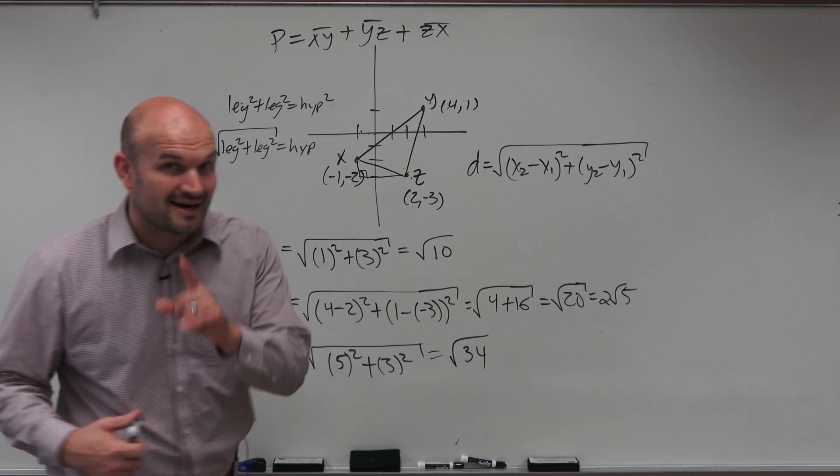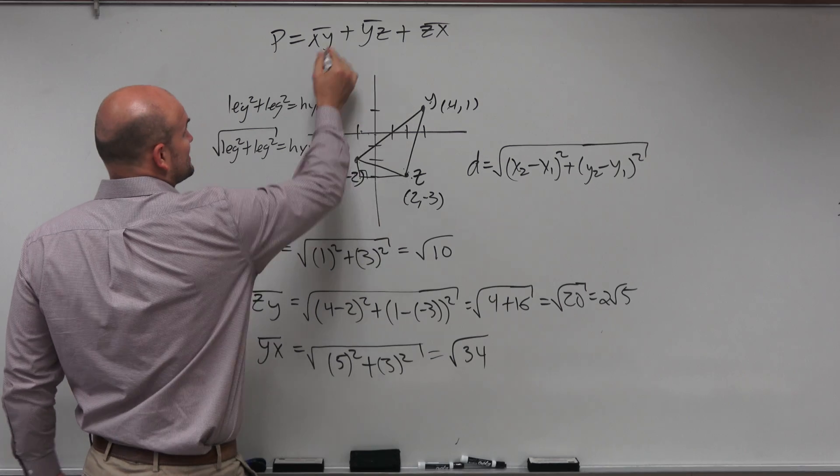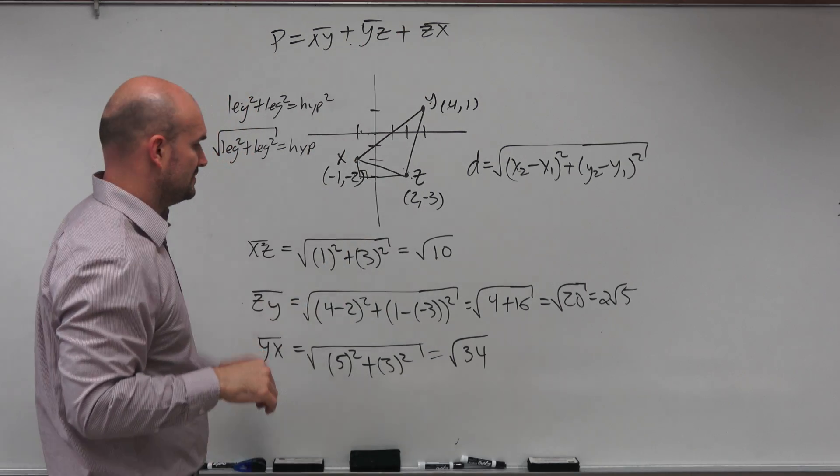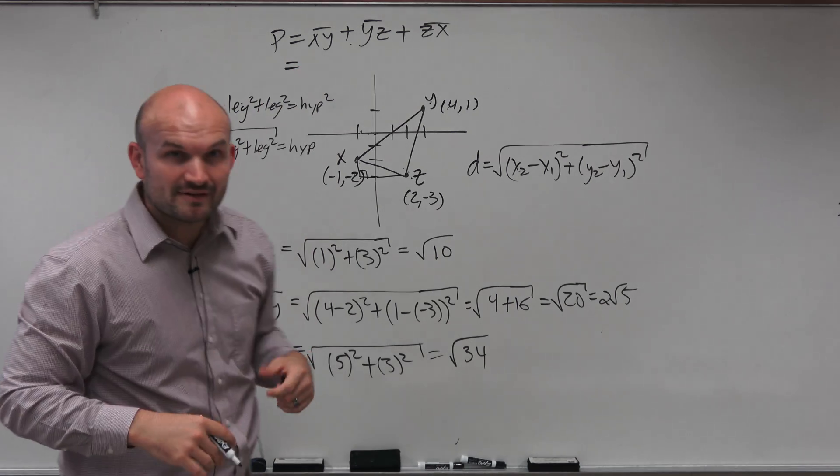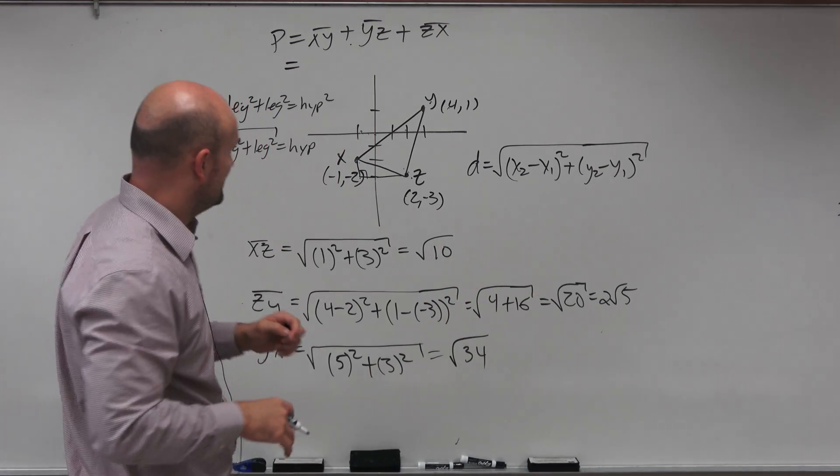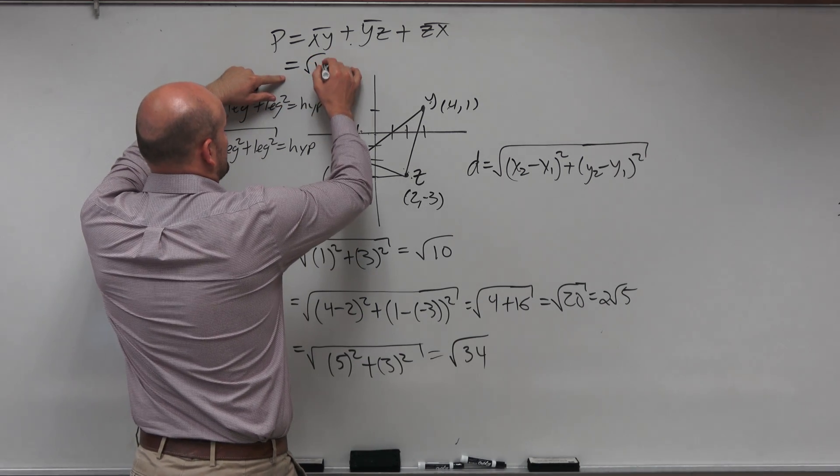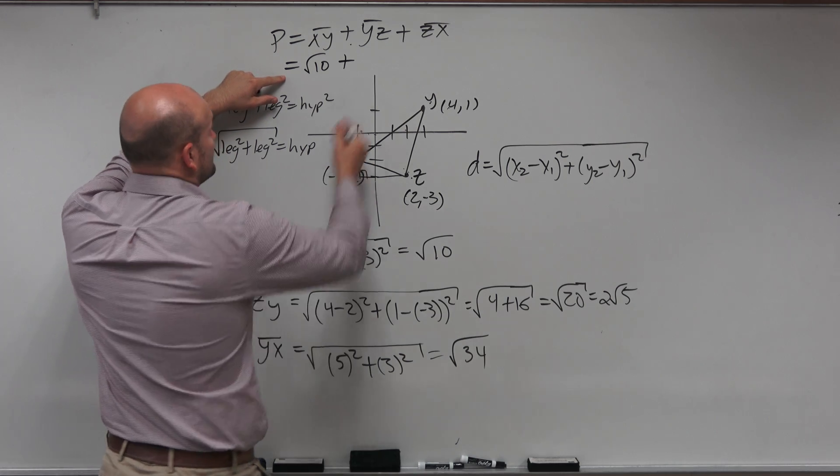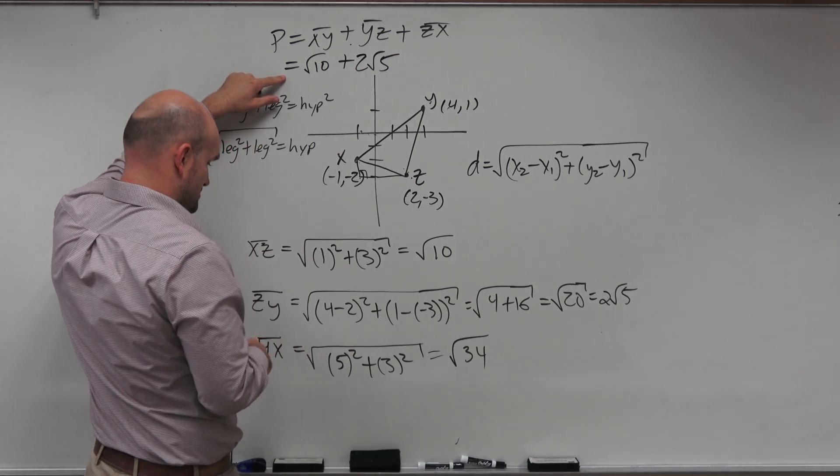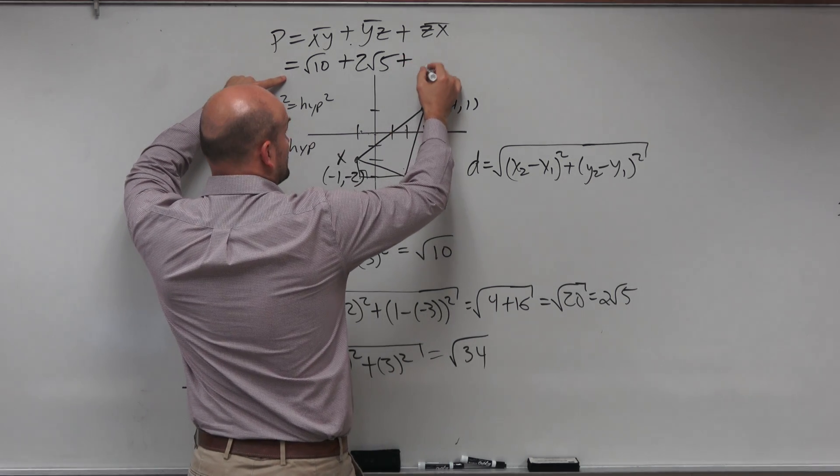And then we are not done, though. I almost got it. Remember, guys, we're finding the perimeter. The perimeter is the sum of all the sides. OK? So the perimeter, and I'm going to leave it as an expression because I don't have a calculator with me, so that's OK. Hopefully, you guys can check my work. We have xy, which is square root of 10, plus yz, or zy, it doesn't matter, is 2 square root of 5. Or you could just do square root of 20. And plus yx is going to be square root of 34.